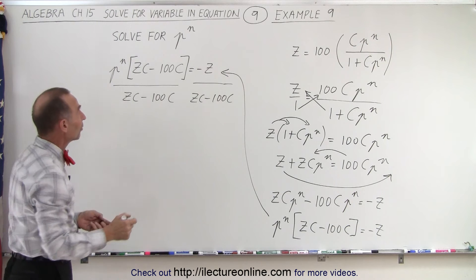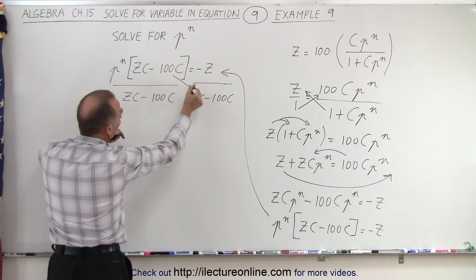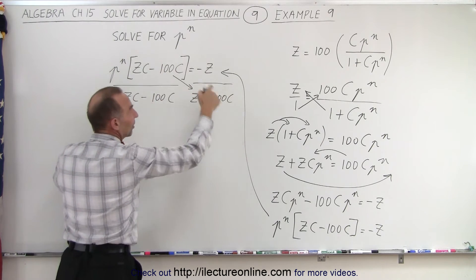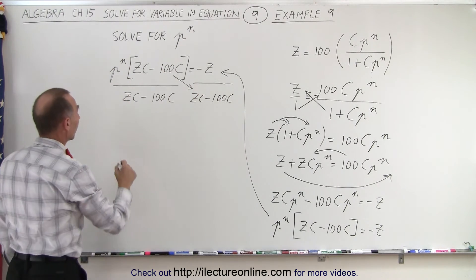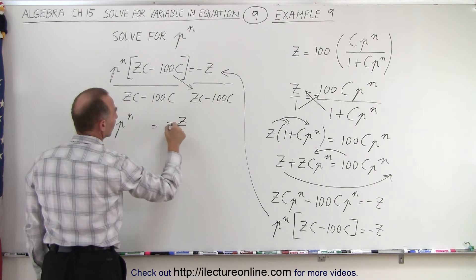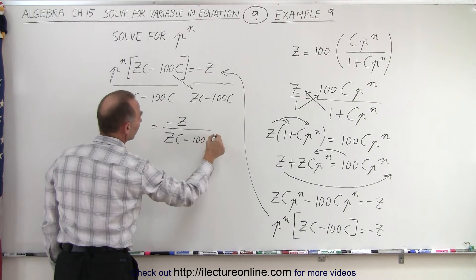Or in essence, what we could have done is simply said, I'm going to take what's inside the brackets and move it across the diagonal over here. In essence, when this cancels out, that's exactly what we end up with. So on the left side we have p to the n is equal to negative z divided by zc minus 100c.